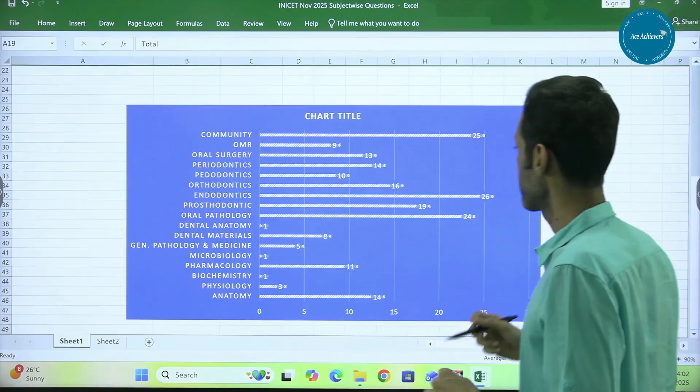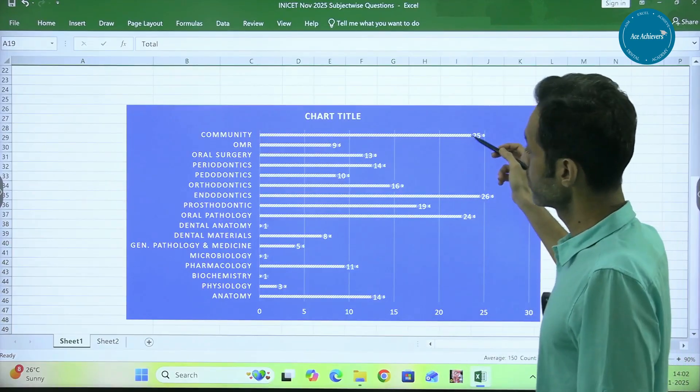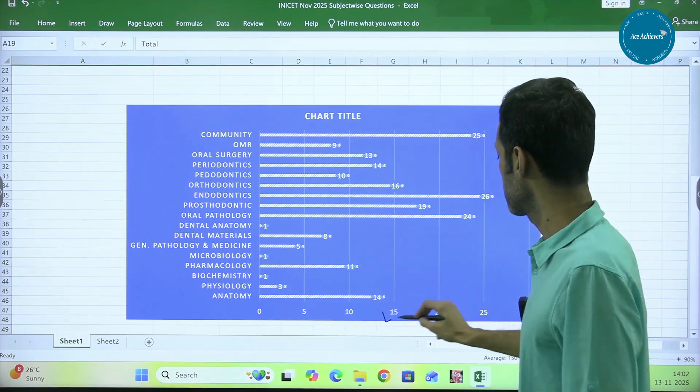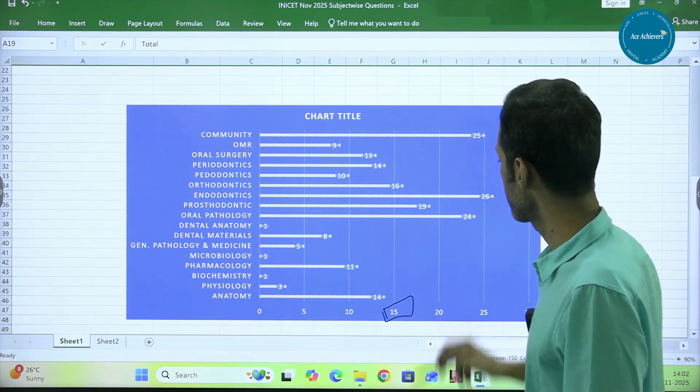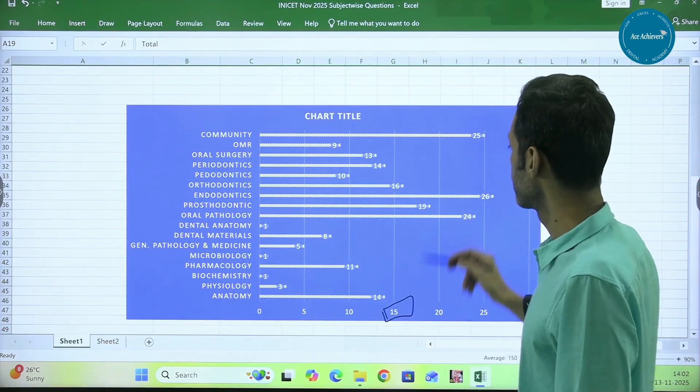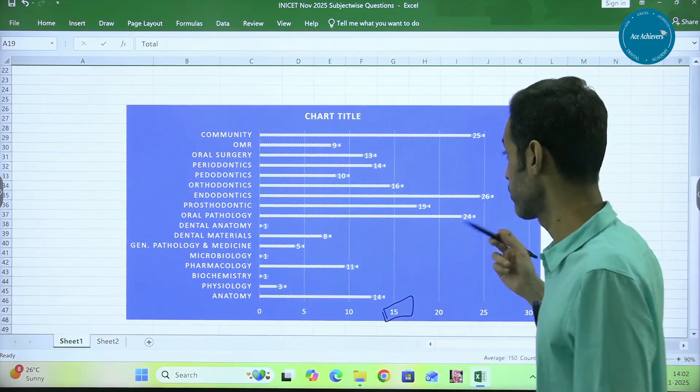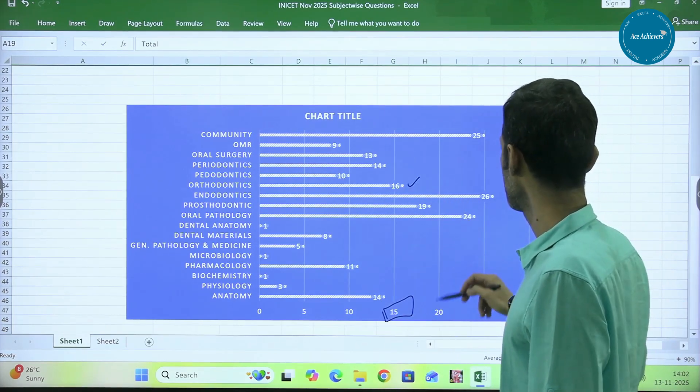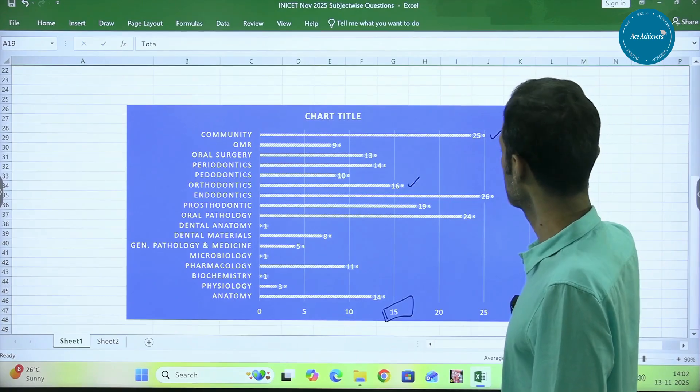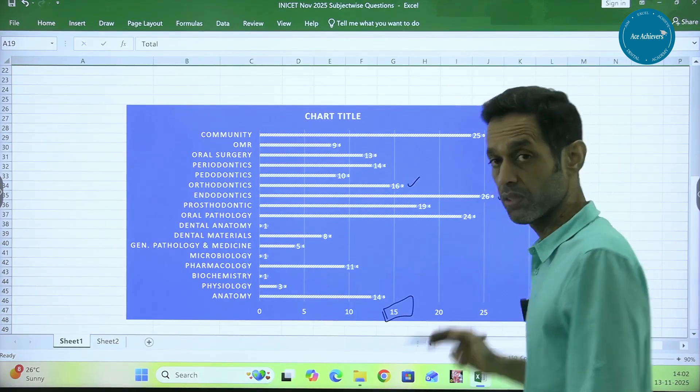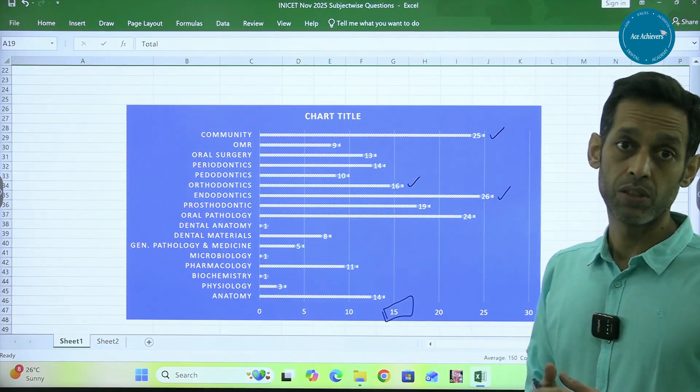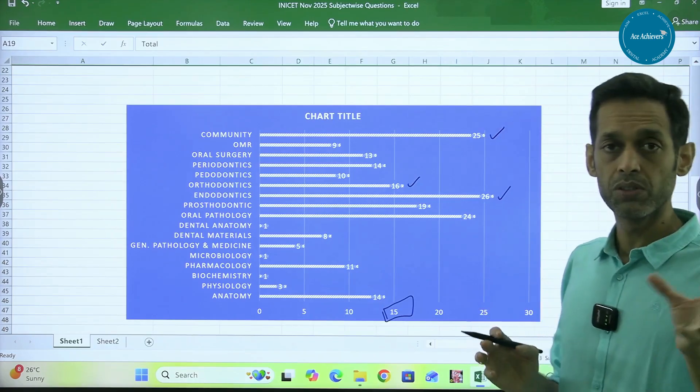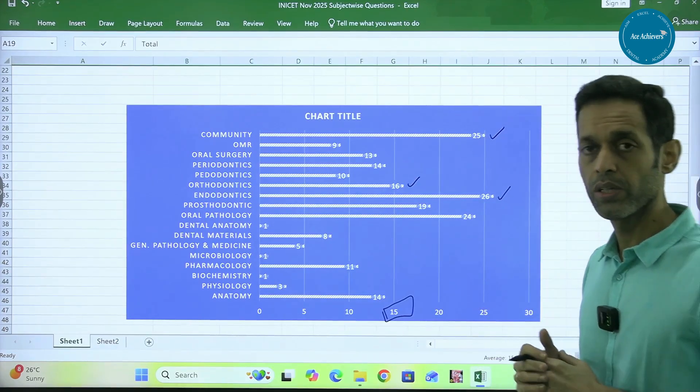If you look at the graph, as to what was the number of questions coming per subject, the whole of it, if you look and we draw a barrier or a line at 15 questions or more, then which all subjects had such a high weightage? This is very important to know. Ortho at 16 just crosses the barrier of 15. Apart from that, we have community. We have endo 26 questions, which is surprising. I mean, the weightage has been slightly more. 26 ki jaga, I would have expected around 18 questions, 17, 18 questions in endo and cons.